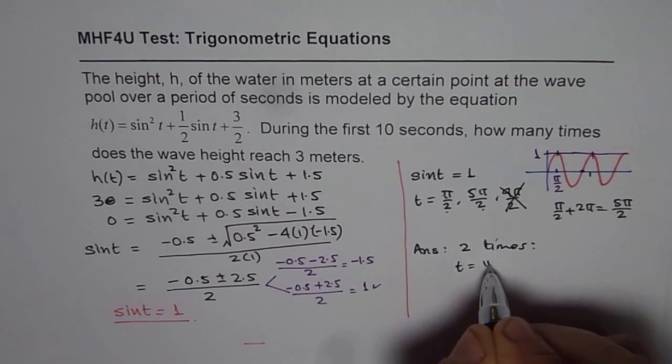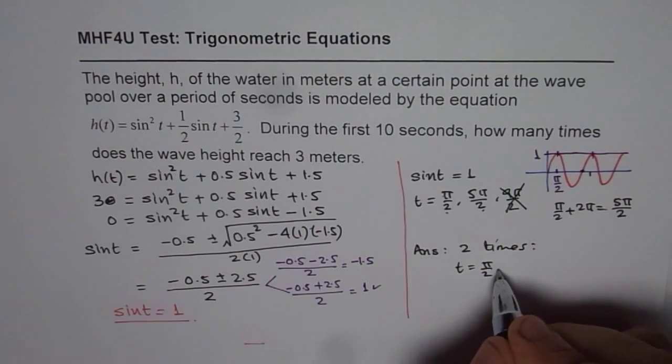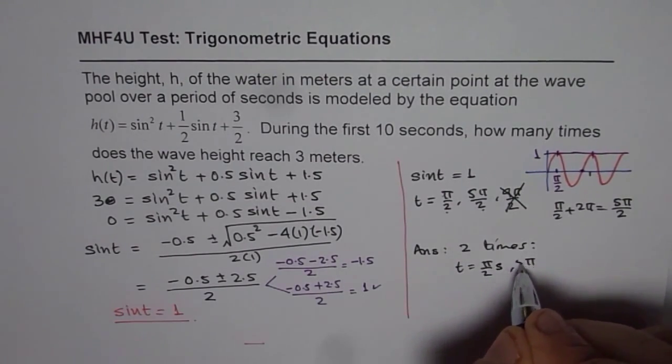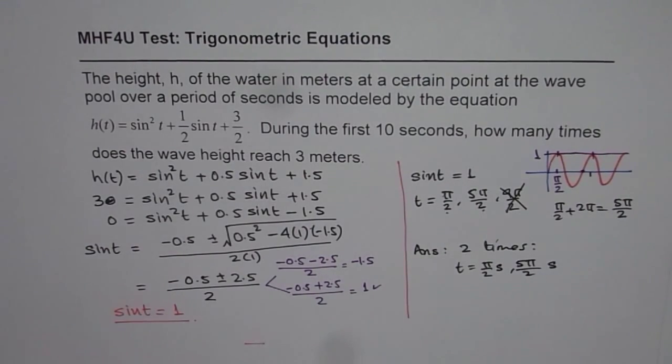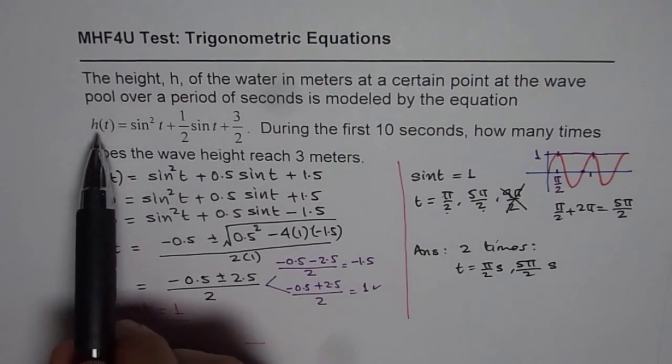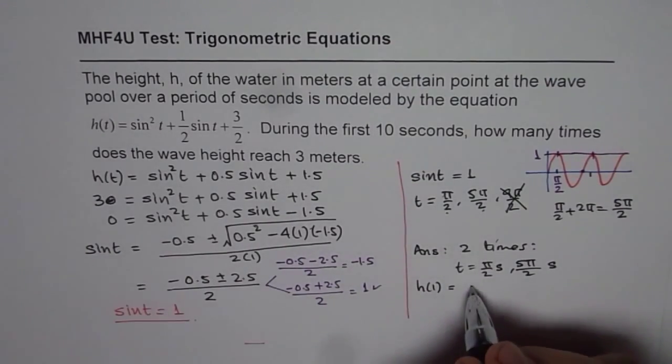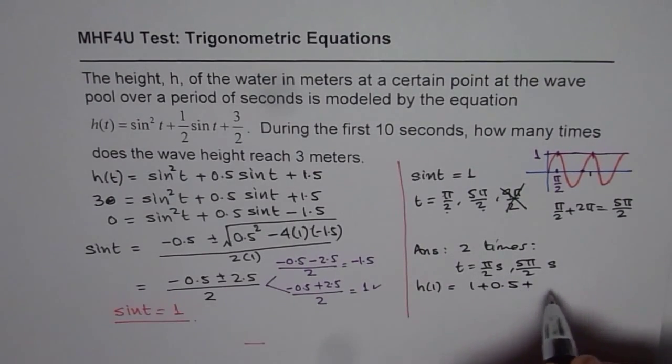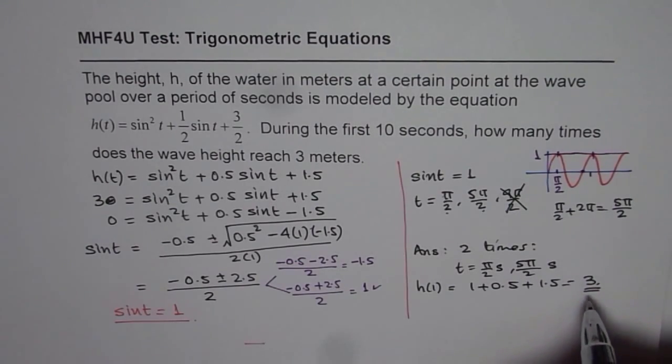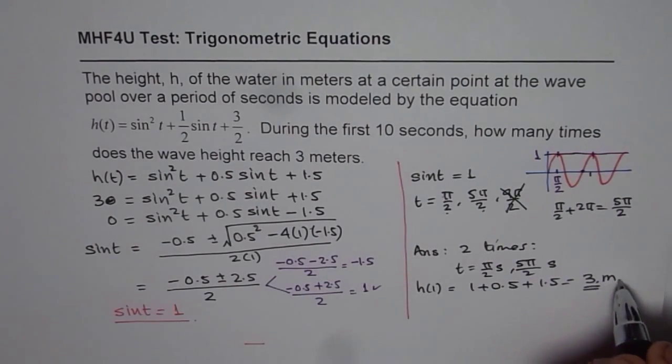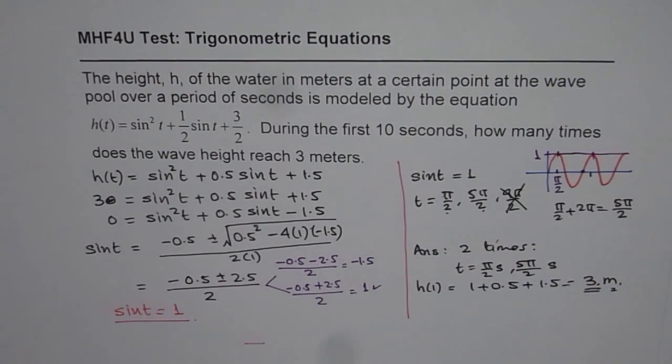And the times are at t equals pi by 2. You should convert them into decimals, you can write seconds. This is the exact value, or 5 pi by 2. So these are the two times in seconds when it reaches its maximum value of 1. You can also find what is the maximum height, which will be at h of 1. So when sin t will be 1, it will be 1 plus 0.5 plus 1.5. So that gives you 3. So that is 3 is your maximum value also for the given function in meters, so 3 meters. So that is how you can answer this question. Thank you.